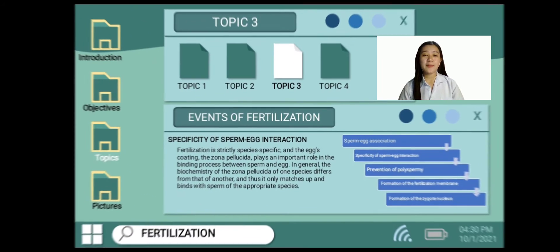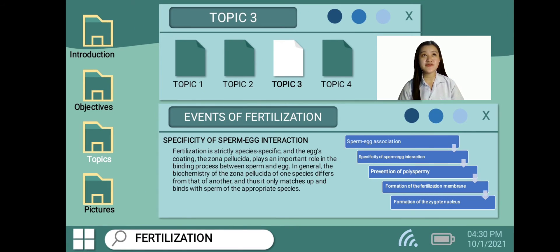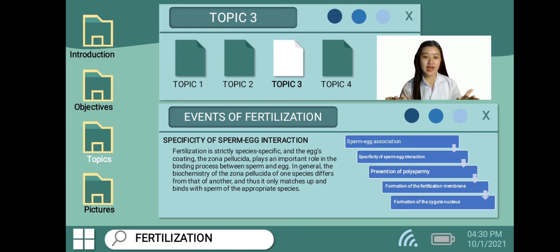The next event is the specificity of sperm and egg interaction. Fertilization is strictly species-specific, and the zona pellucida of the egg plays a significant role in binding between sperm and egg. The biochemicals of one species' zona pellucida vary from that of another species; therefore, sperm will only match and bind with the sperm of the same species.